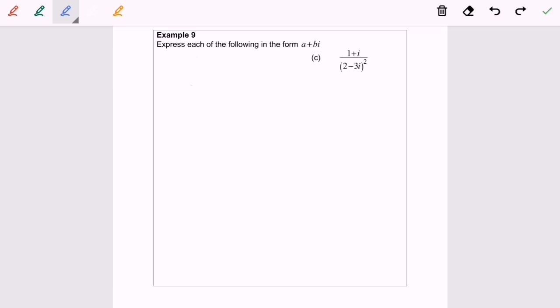So now I'm going to expand the denominator. So 1 plus i over 2 minus 3i square. So I'm going to expand the part for the denominator. So it will become 1 plus i over 4 minus 6i minus 6i plus 9i square.